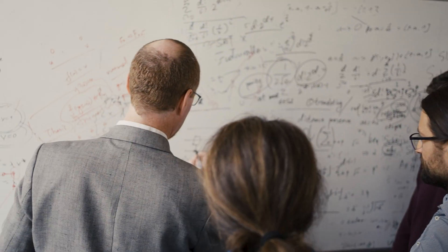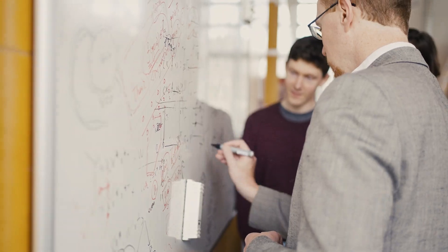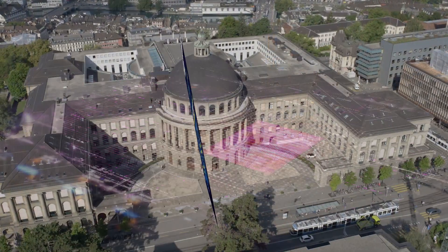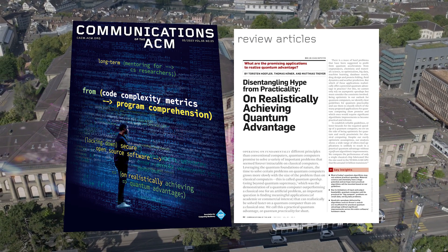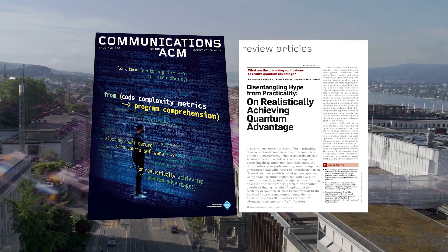What this paper says is that we have to be careful when designing these algorithms to focus on the right speed-up regime. This is especially important for theoretical computer scientists and algorithm designers — not just to focus on the asymptotic speed-up, but also on the constant factor speed-up. Find out more in the review article 'Disentangling Hype from Practicality on Realistically Achieving Quantum Advantage' in the May 2023 Communications of the ACM.